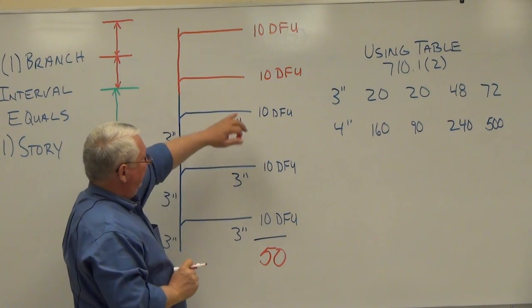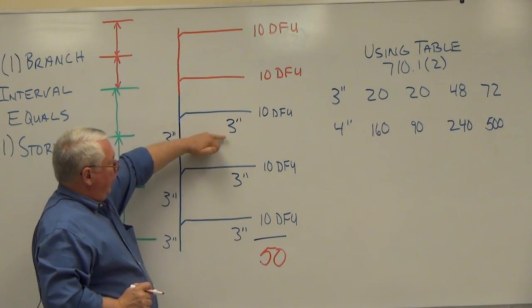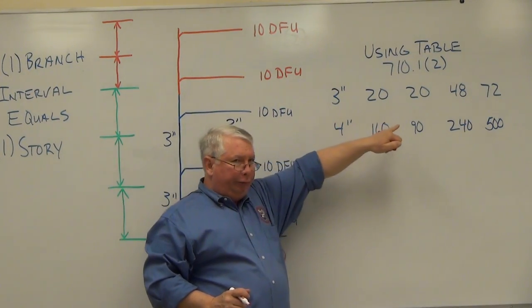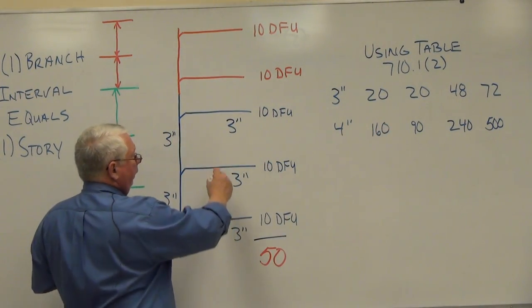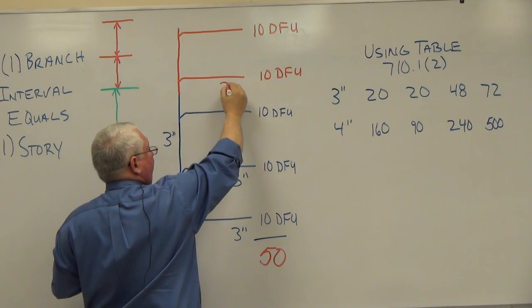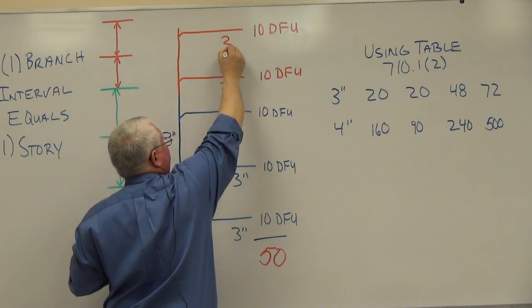If I look at my sizing, once again each horizontal branch is only allowed to have a maximum of 20 drainage fixture units discharging to it, and I only have 10 on the top two, so each one of these horizontal branches is going to be three inch.